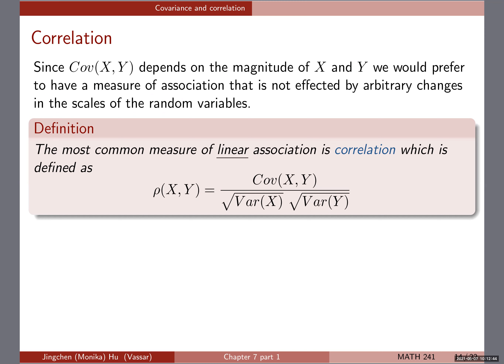Correlation is a measure of linear association. The definition uses rho: in the denominator you have the square root of variance of x and the square root of variance of y — that is, the standard deviation of x and the standard deviation of y. So covariance tells us how x and y relate to each other, and we are scaling it by the standard deviations of x and y, essentially standardizing rho.